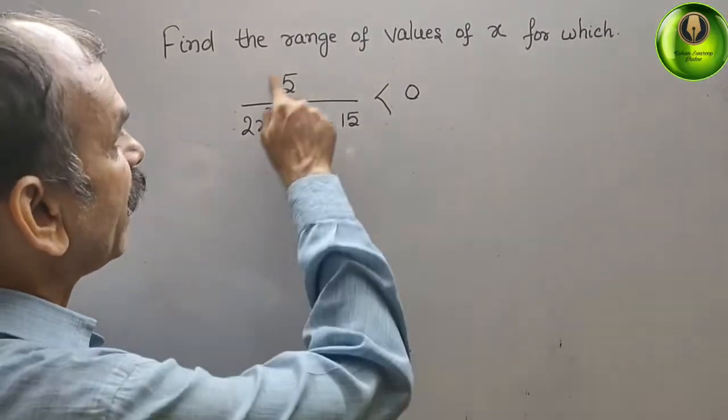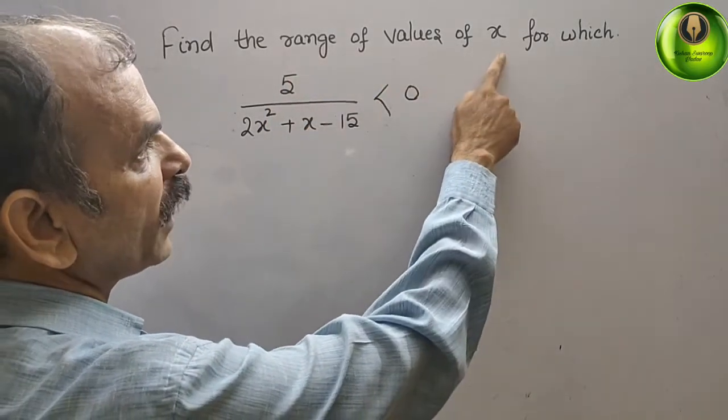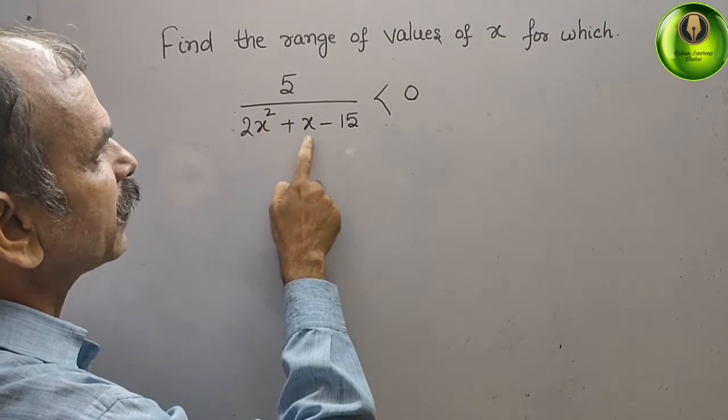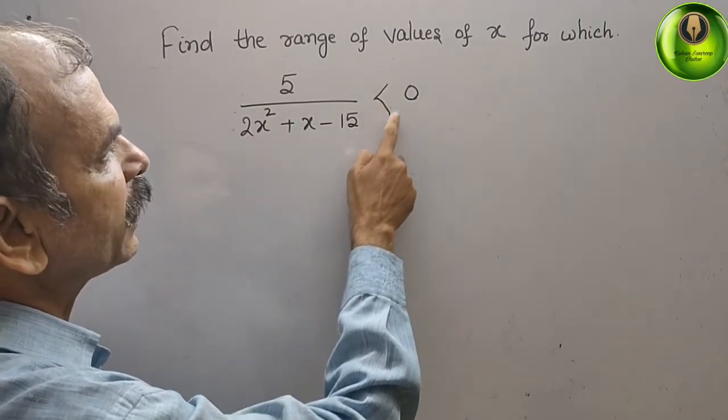Your question is: find the range of values of x for which 5 divided by 2x² + x - 15 is less than 0.